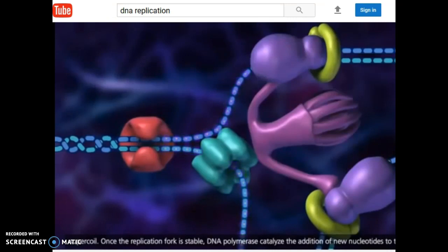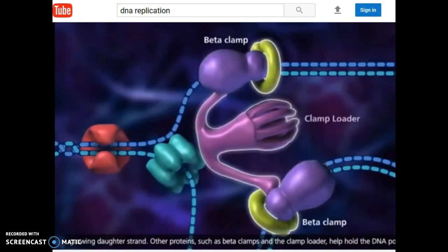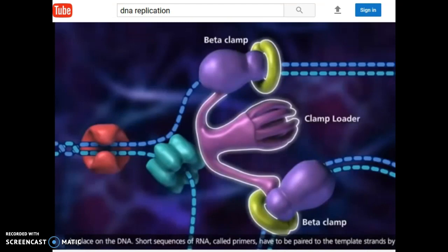DNA gyrase is used to make sure the double-stranded areas outside of the replication fork do not supercoil. Once the replication fork is stable, DNA polymerase catalyzes the addition of new nucleotides to the growing daughter strand. Other proteins such as beta-clamps and the clamp loader help hold the DNA polymerase in place on the DNA.